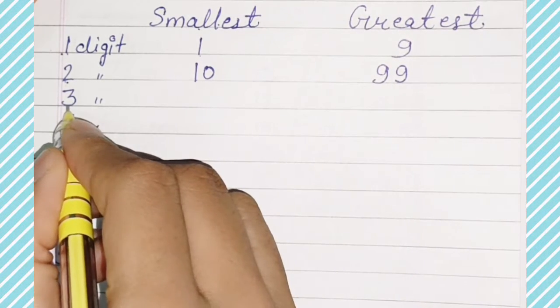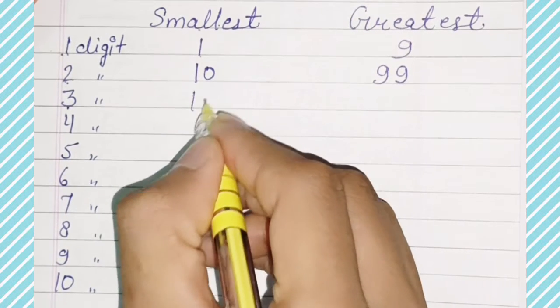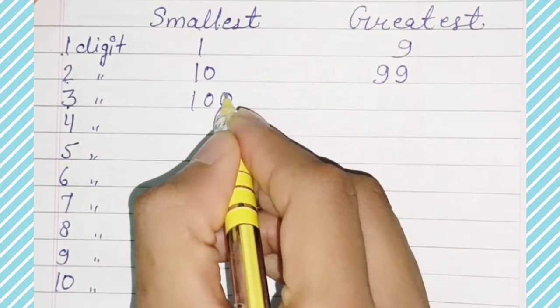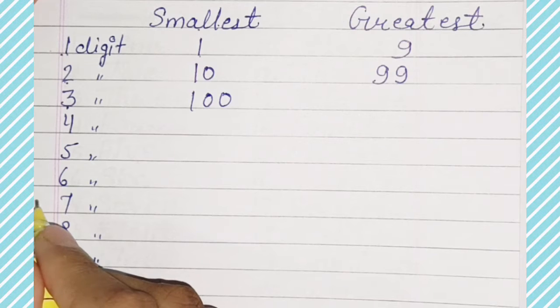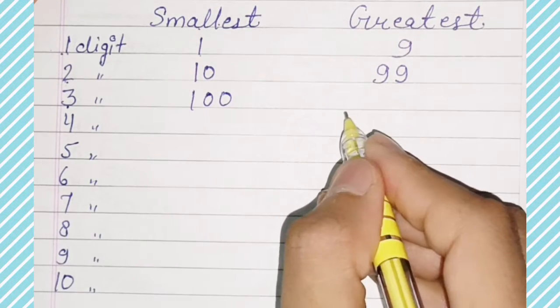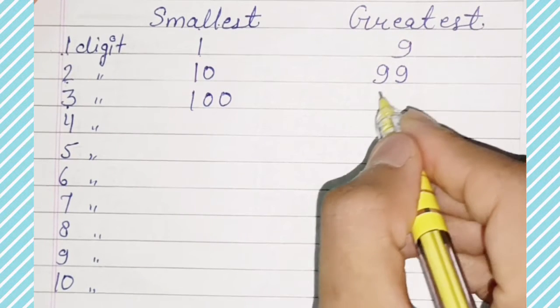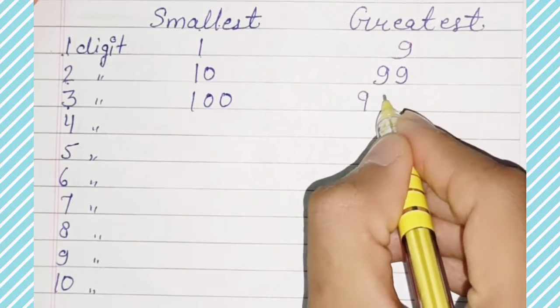3-digit smallest number is 100 and 3-digit greatest number is 999.